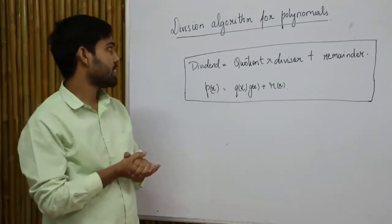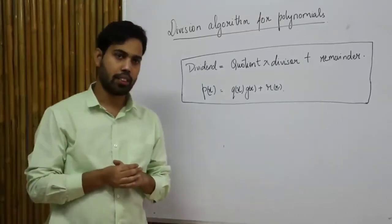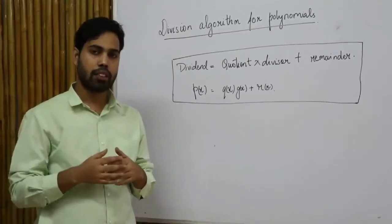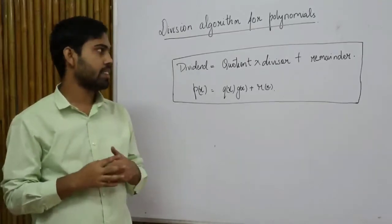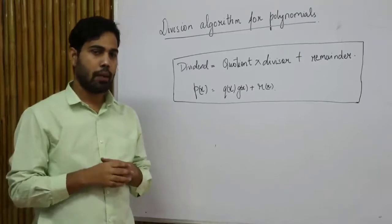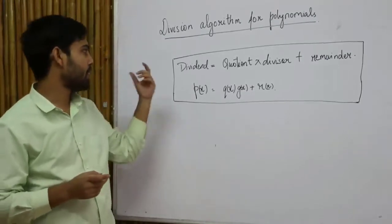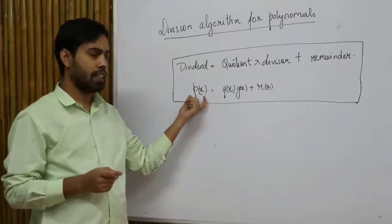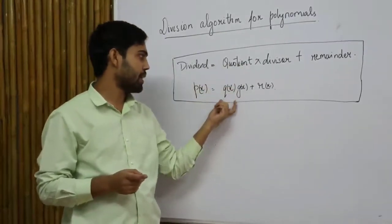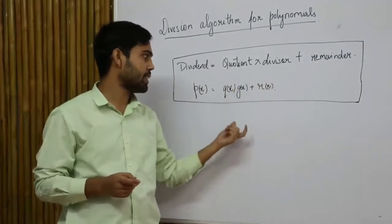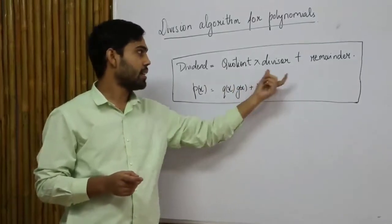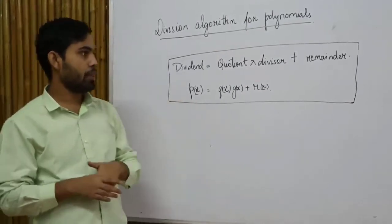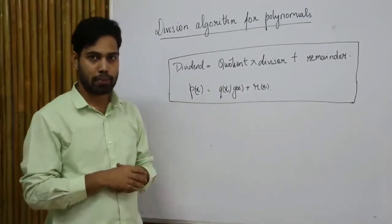Now we will discuss an important algorithm in polynomials: the division algorithm for polynomials. This algorithm states that the dividend equals the quotient times the divisor plus the remainder. In terms of polynomials, the dividend is represented by p(x), the quotient by q(x), the divisor by g(x), and the remainder by r(x).